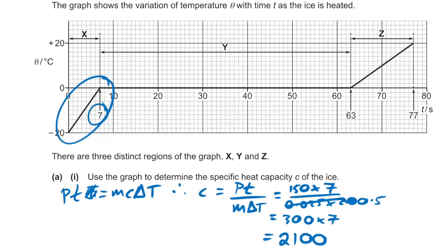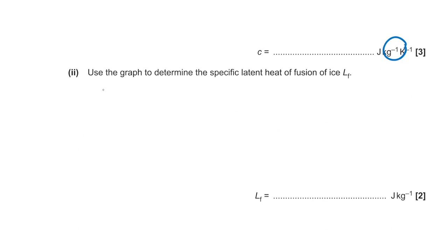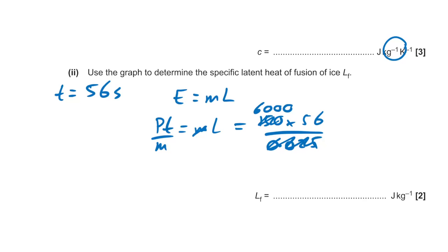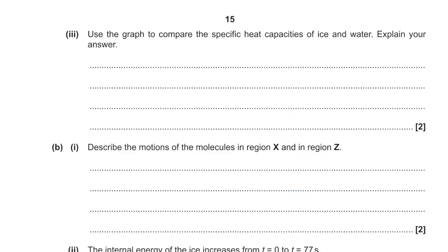Use the graph to determine the specific latent heat of fusion of ice. The melting plateau runs from 7 to 63 seconds — that's 56 seconds. L = Pt/m = 150 × 56 / 0.025 = 336,000 J/kg.